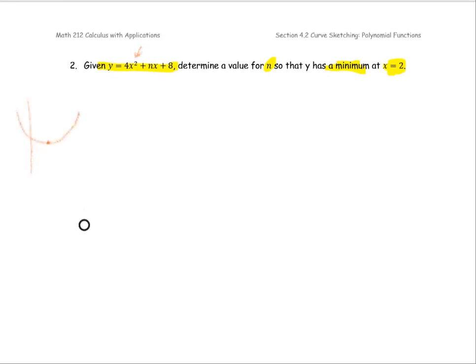It's going to give you the local minimum value, and based on the general graph property, at the lowest point here, the slope is 0, and the slope is the y prime, and the y prime occurs at x equals 2, so that means y prime at 2 equals 0. So this is the concept for this problem.